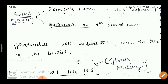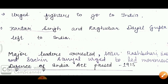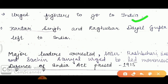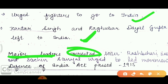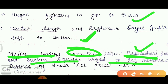The mutiny was planned for February 21, 1915. The fighters stationed abroad were urged to go to India and start a mutiny. Kartar Singh and Ragubar Dayal Gupta were on their way to India. But because the British had prior suspicion, they arrested the major leaders. Raj Bihari Bose and Sachin Sanyal then led the movement, attempting to carry out the mutiny.